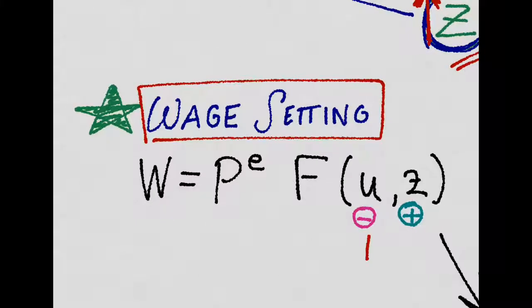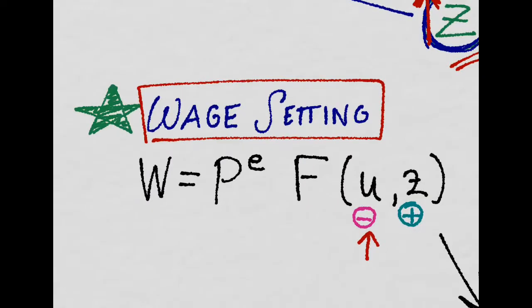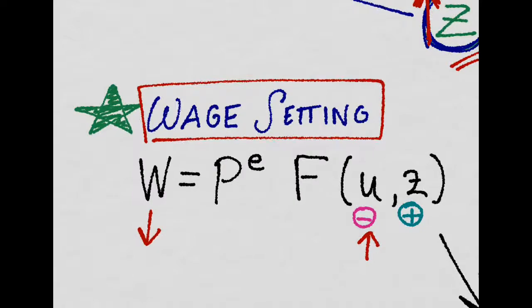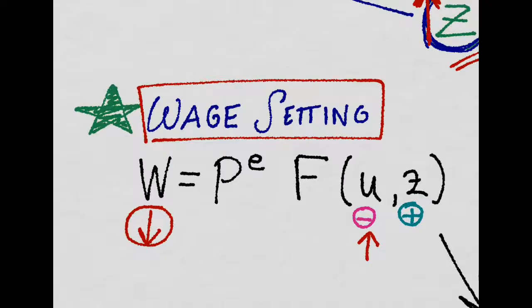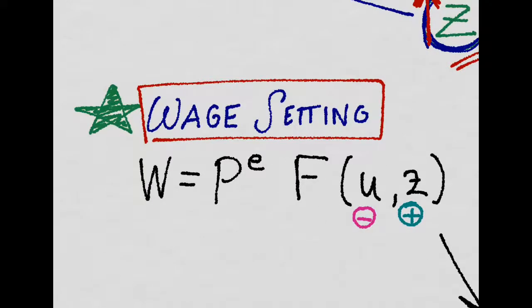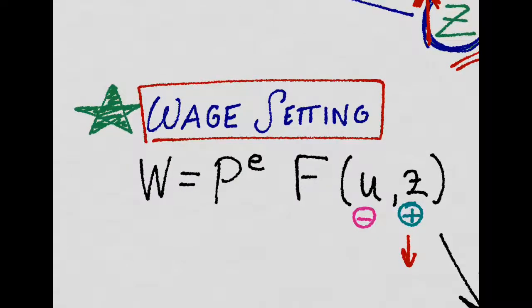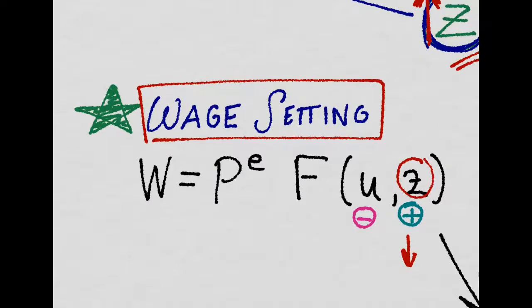If the unemployment rate in the economy is high, workers will be forced to accept lower wages, because they fear that if they don't accept lower wages, they will get fired. Now imagine there is a government who decides to make the labor market more flexible. They will cut down the minimum wage and the unemployment insurance, lowering Z. And now firms have more power in order to force workers to accept lower wages.